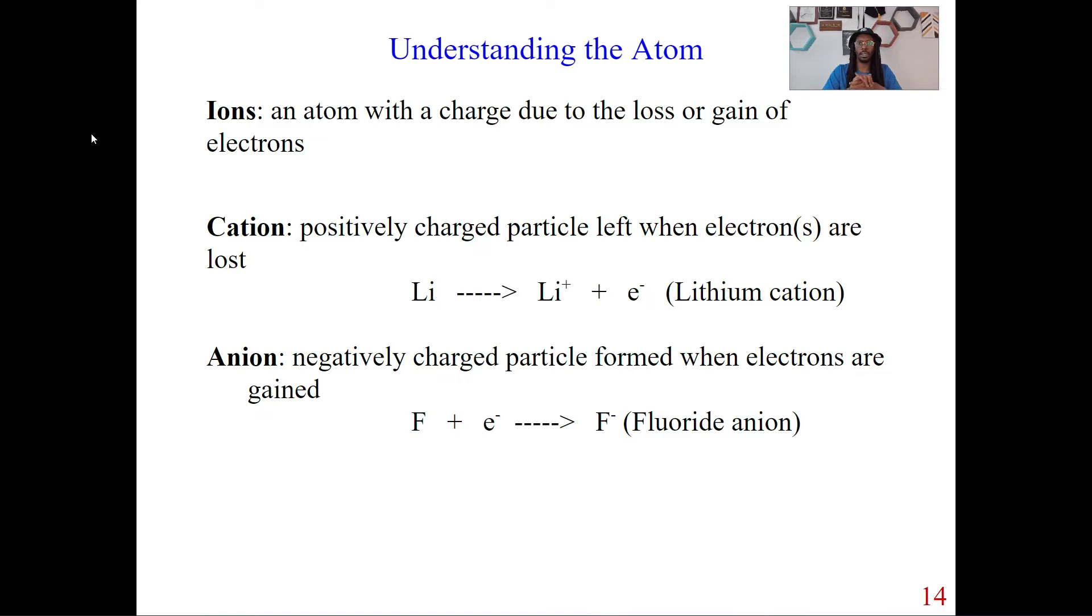So basically, with isotopes, if we think about isotopes, you can have an element that has a different amount of neutrons. With an ion, you can have an element with different amount of electrons. And that's how we have to think about ions. So depending on the loss or gain of those electrons, you're going to have two types of ions, a cation or anion.